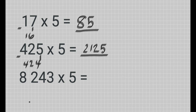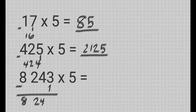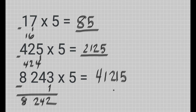Now let's have the last example: 8,243 times 5. Again, 8,243 is an odd number, so all you need to do is subtract 1 from the multiplicand, so that becomes 8,242. Now after that, you need to get half of this number. The half of 8,242 is 4,121.